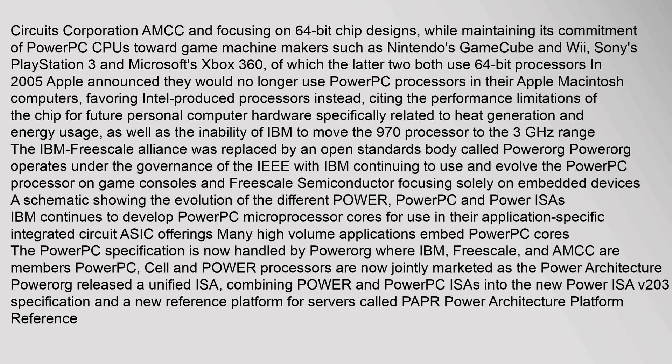In 2005, Apple announced they would no longer use PowerPC processors in their Macintosh computers, favoring Intel-produced processors instead, citing the performance limitations of the chip for future personal computer hardware — specifically related to heat generation and energy usage — as well as the inability of IBM to move the 970 processor to a smaller process node.